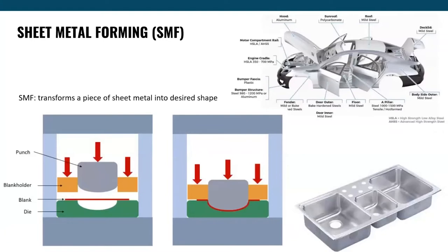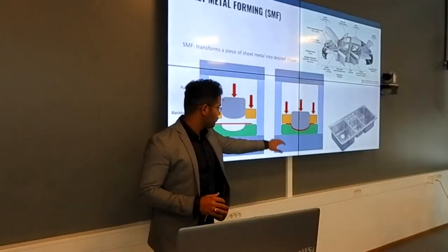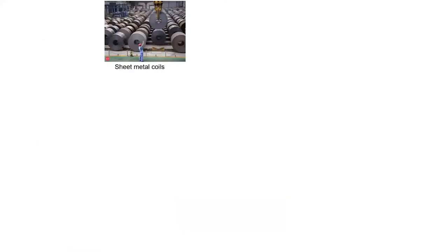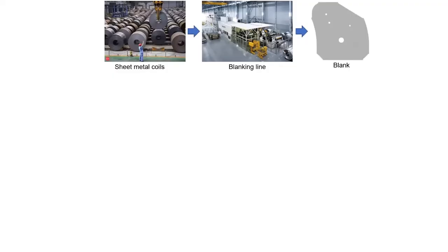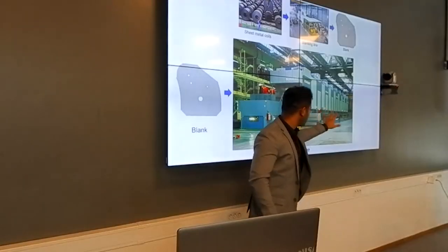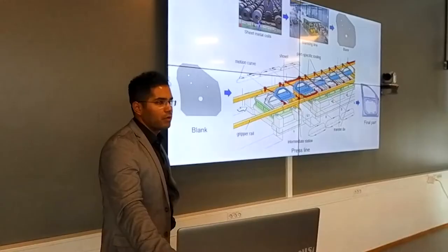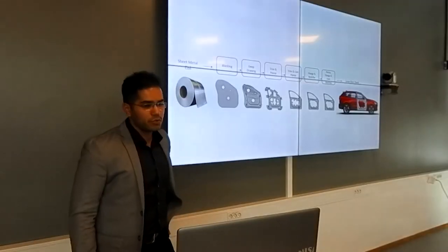What is sheet metal forming? It is a manufacturing process where a sheet metal is placed between two tools and a punch comes and deforms it into the desired shape. This can happen in one step or more. Typically you have parts such as body components of an automobile or even a kitchen sink produced during this process. It starts with sheet metal coils, which are fed into a cutting line to produce a blank. These blanks are then fed into press lines where you have several tools stacked progressively — they're quite huge, you can see a human being standing there — to produce the final part. There are different operations involved during production.